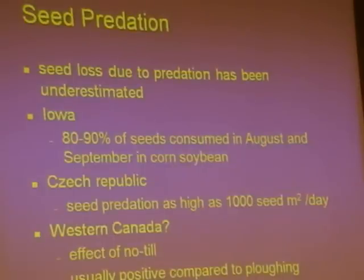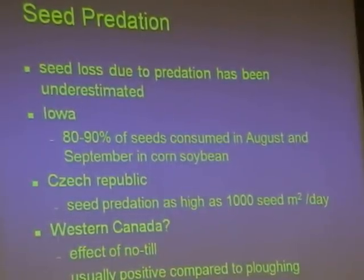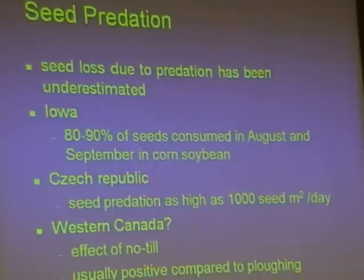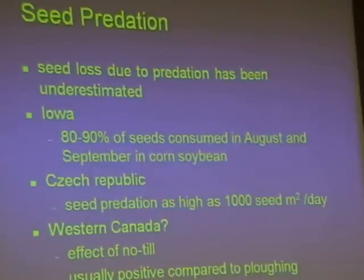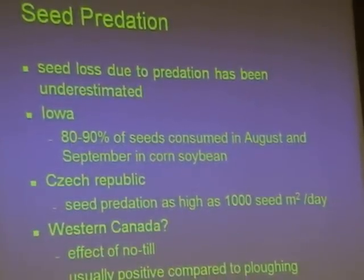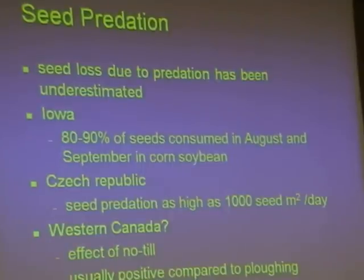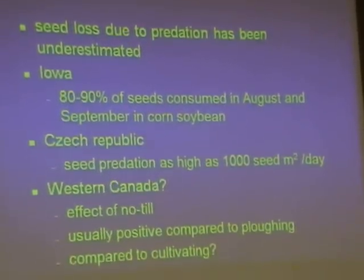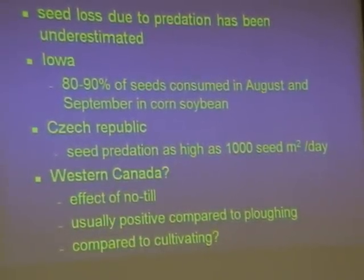Especially when you have a competitive crop. Our next hypothesis is to look at seed predation. There seems to be some good research coming out — I know Martin did some at Glen Lee. In Iowa, they find that about 80 to 90% of the weed seeds that fall on the ground and remain exposed are eaten in August and September. In the Czech Republic, they've measured rates of seed consumption up to a thousand seeds per meter squared per day. In Western Canada, no-till normally has a positive effect. If you bury the weed seed, it's harder to find. We don't know how it works in cultivation, and normally these studies are done compared to plowing, which is complete inversion. So we're going to look at that.